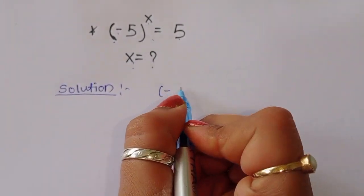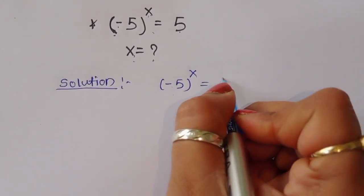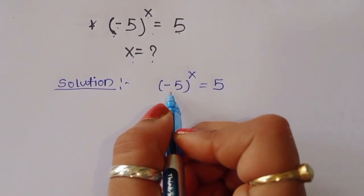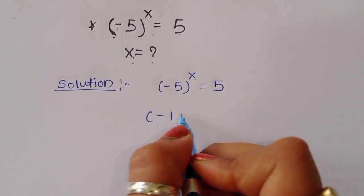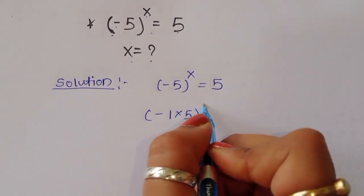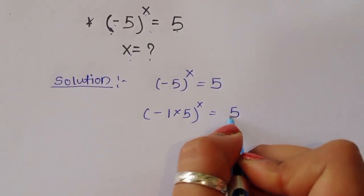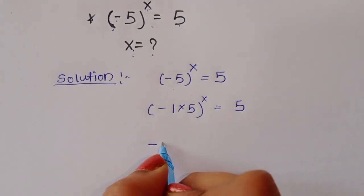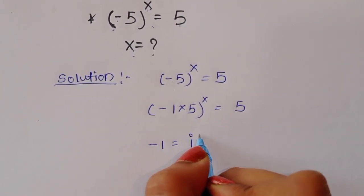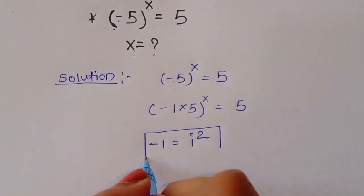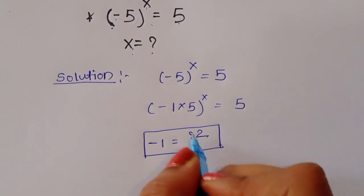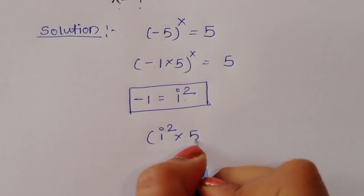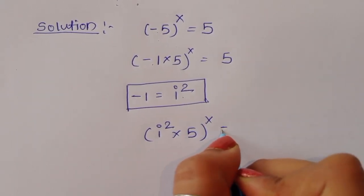First, the question is given: minus 5 power x is equal to 5. We can write this as minus 1 times 5, power x, is equal to 5. Now, we know one thing: minus 1 is equal to i squared. So we can write i squared times 5, power x, is equal to 5.